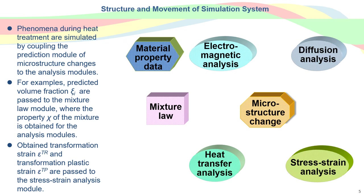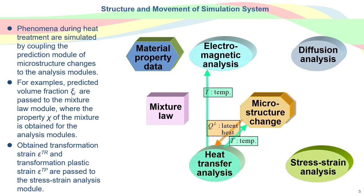I'd like to explain the structure and movement of the heat treatment simulation system more concretely. Phenomena during heat treatment are simulated by coupling the prediction module of microstructure change to the analysis modules. First, temperature calculated by heat transfer analysis is transferred to other modules. Using the new temperature, the module of predicting microstructure change will obtain the latent heat, while the electromagnetic analysis calculates Joule's heat using the new temperature.